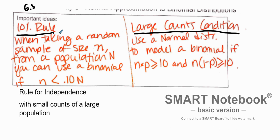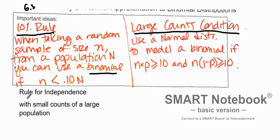If you have a sample size of n that may not be independent — because you're sampling without replacement — but you're taking from a large population, can you still use binomial setting values and the binomial probability equation to solve for various probabilities? The answer is yes. This is called the 10% rule.